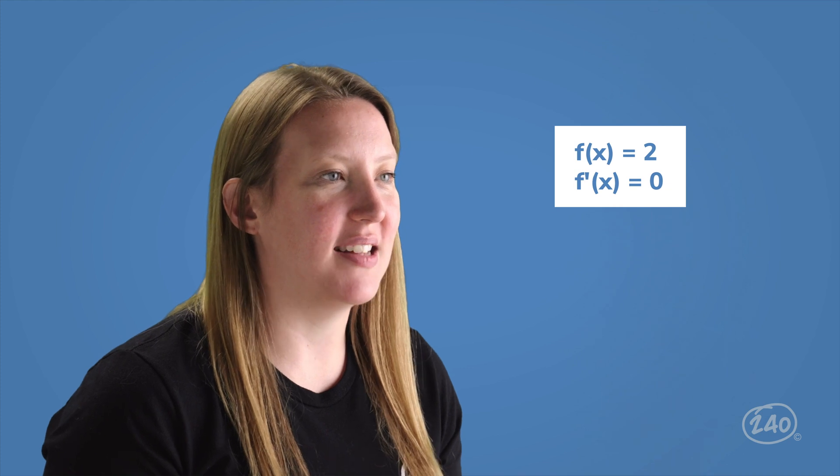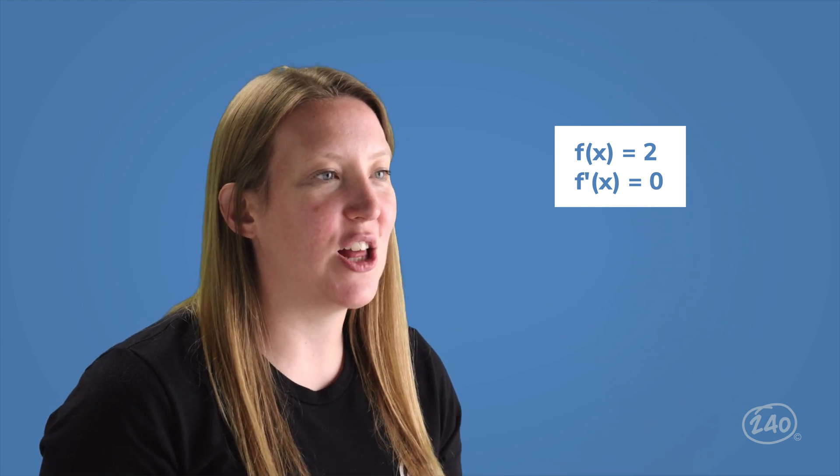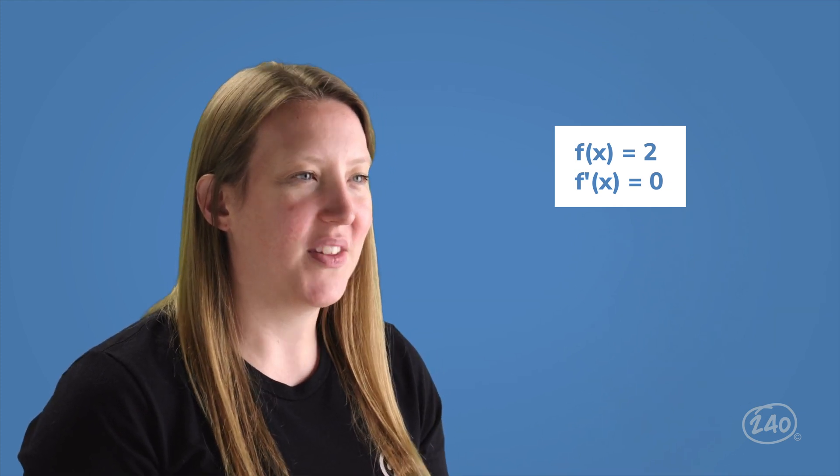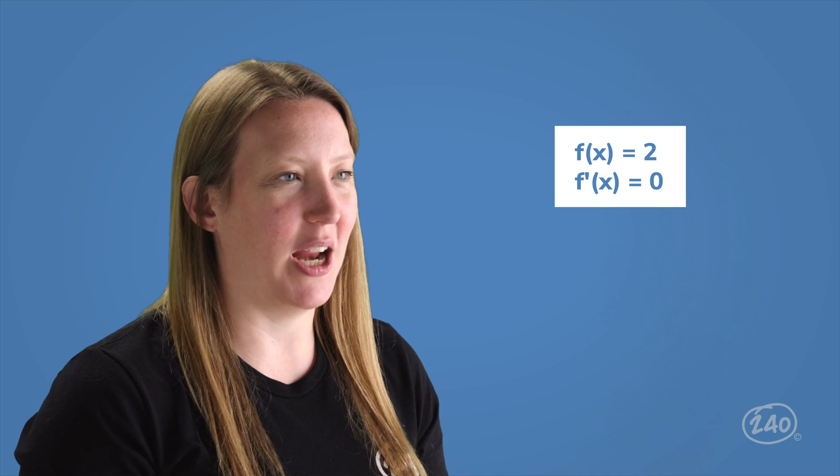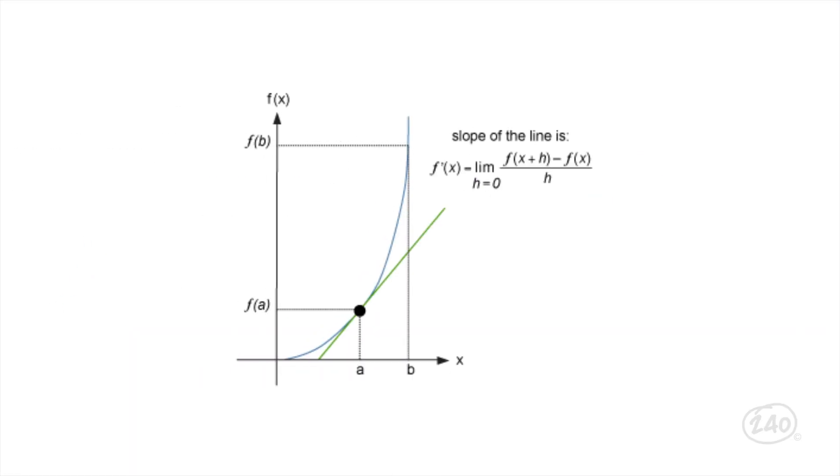Note, the derivative of a constant is zero because the slope of the function is zero. Take a look at this example to see what I mean. The formal definition of the derivative shows how the derivative results from a limit. Take a look at this formula. Copy this down in your notes if you need it.